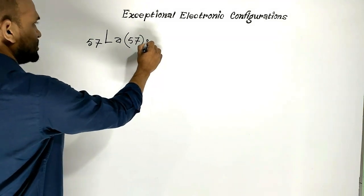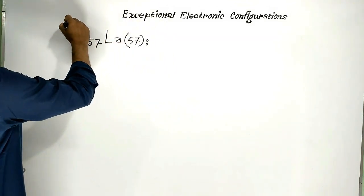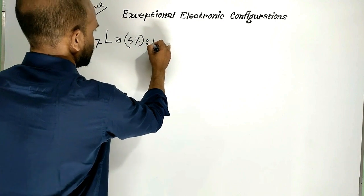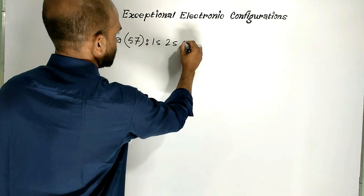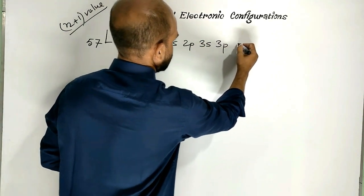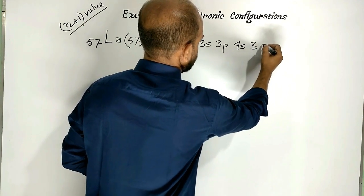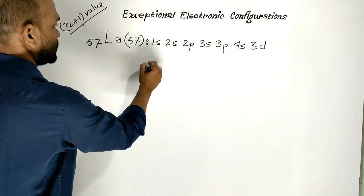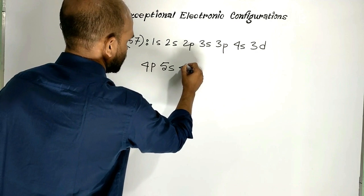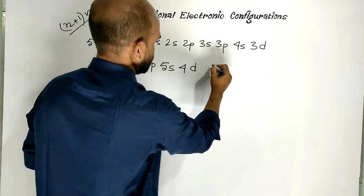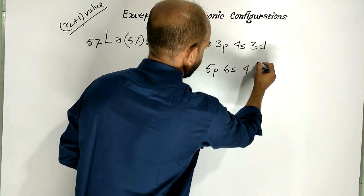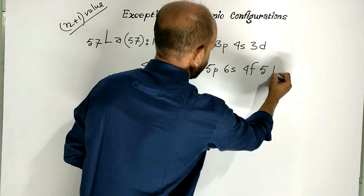First of all, let us write the orbitals according to n plus l value. The order is: 1s, 2s, 2p, 3s, 3p, 4s, 3d, then 4p, 5s, 4d, after that 5p, 6s, then 4f and 5d.